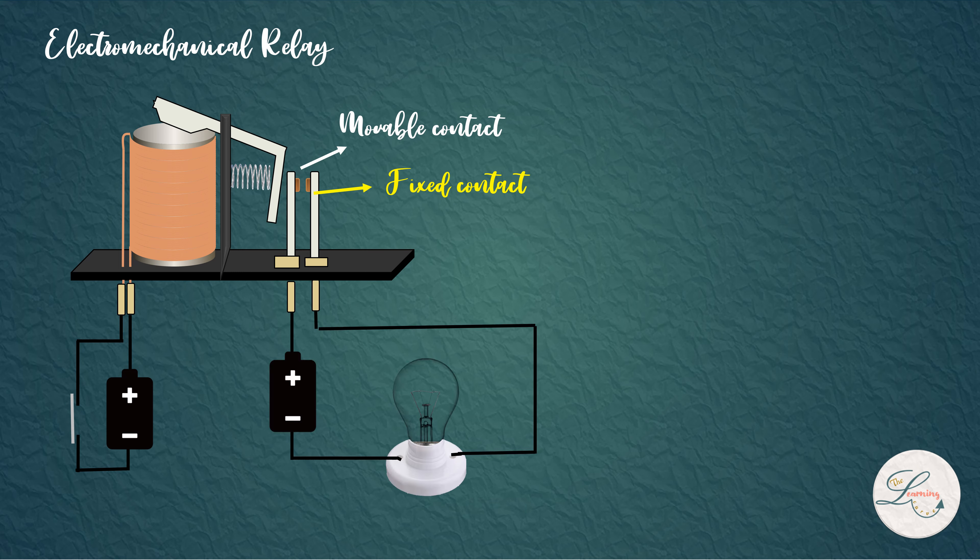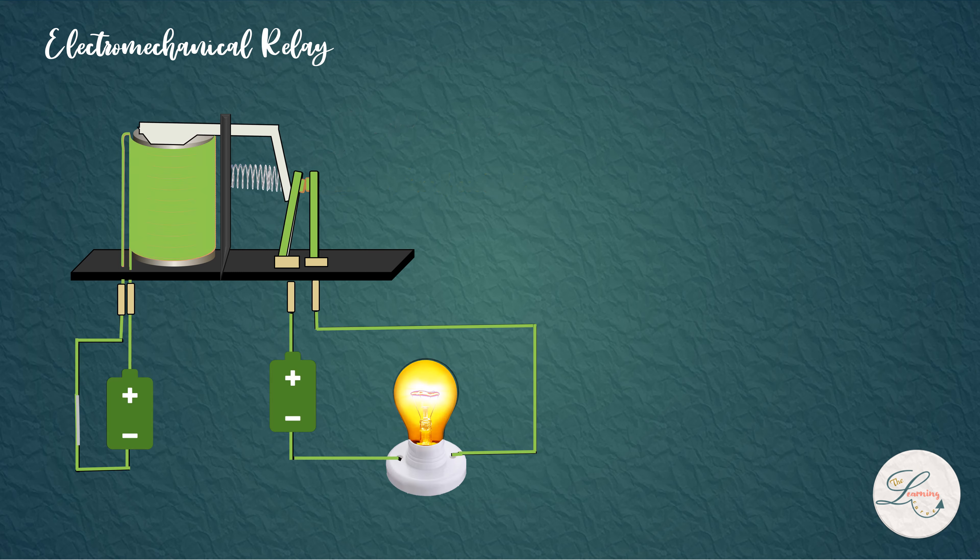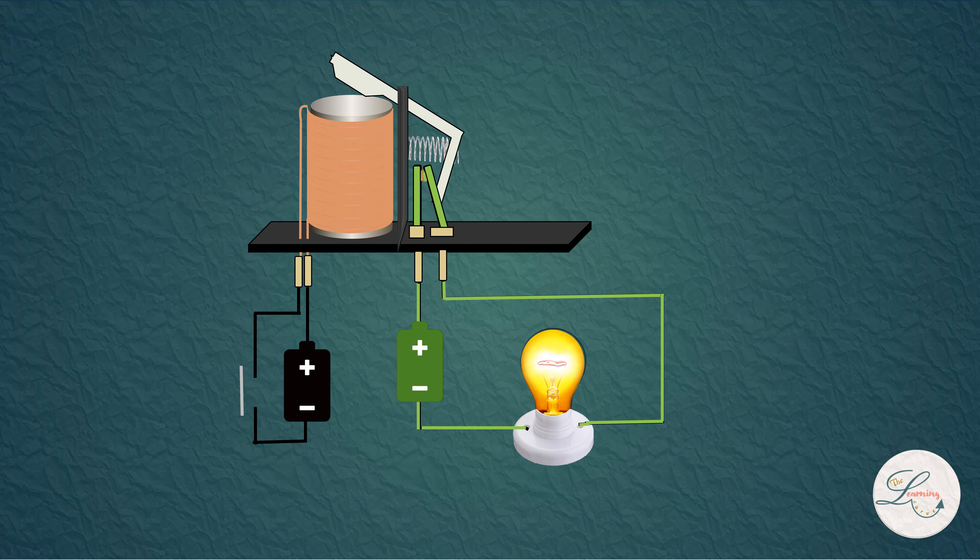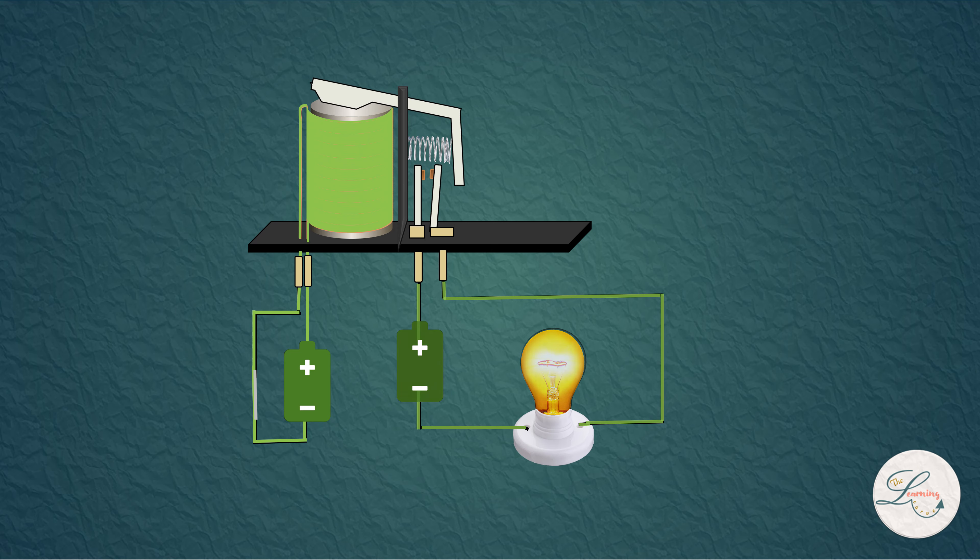This kind of contact which closes the circuit when the relay is activated is called normally open contact. And this one which opens the circuit when the relay is activated is called normally closed contact.